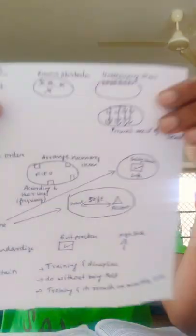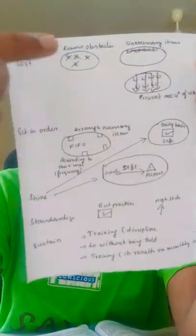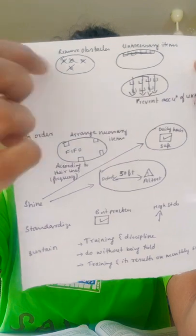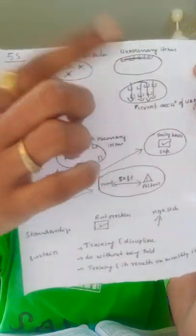Starting with Sort: when sorting, the first thing is to remove obstacles. Second, unnecessary items should be removed. Third, prevent the accumulation of unnecessary items. So in Sort — remove obstacles, remove unnecessary items, and prevent their accumulation.